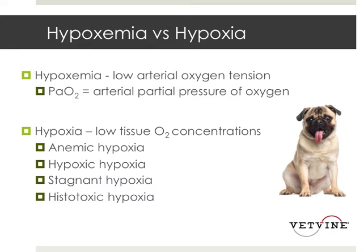Stagnant hypoxia is when the cardiovascular system is not moving oxygen appropriately — for example, when cardiac output is low. Histotoxic hypoxia is when the electron transport chain in the mitochondria cannot handle the normal amount of oxygen delivered to it — examples include cyanide toxicity and some forms of sepsis.